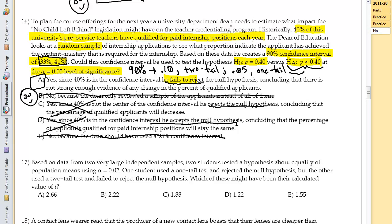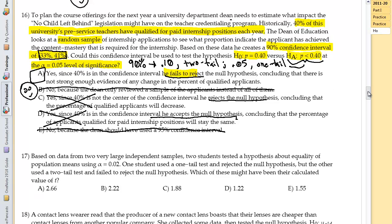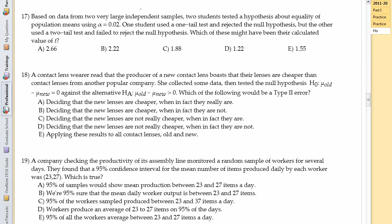I know I kind of skipped around these a little bit more than I normally do, but I felt like because of the one tail, two tail, I wanted to address a couple of things earlier. So there we go. Seventeen. I realize there are some questions in class about this one. Based upon data from two very large independent samples, two students test the hypothesis about equality of population means using alpha of 0.02. One student used the one tail test and rejected the null hypothesis, but the other used the two tail test and failed to reject the null hypothesis. Which of these might have been their calculated value of t?